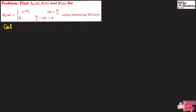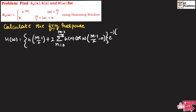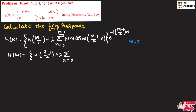The frequency response of the FIR filter is: H(ω) = h((M−1)/2) + 2 · Σ(n=0 to (M−3)/2) h(n) · cos(ω·((M−1)/2 − n)) · e^(−j(M−1)/2 · ω). Substituting M = 7, the limits become n = 0 to 2, and the exponent becomes e^(−j3ω).